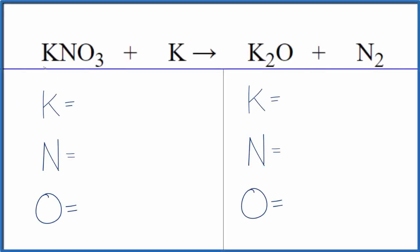In this video, we'll balance the equation for KNO3 plus K. So we have potassium nitrate plus metallic potassium. And if you heat this up, this reaction will take place. It's kind of a convenient way to make this potassium oxide here.